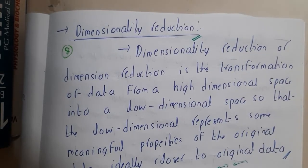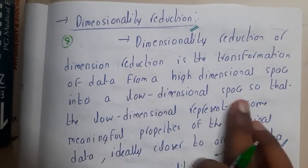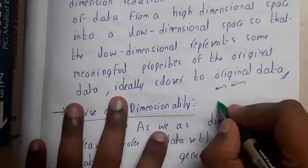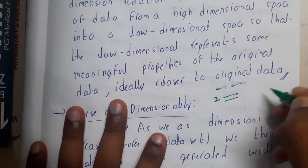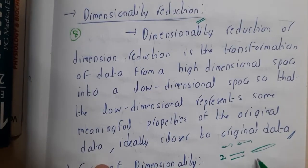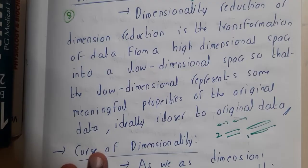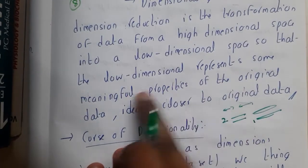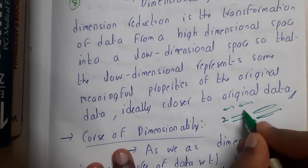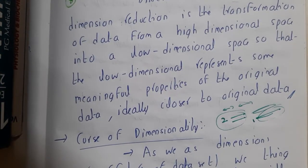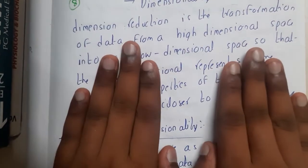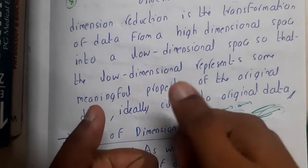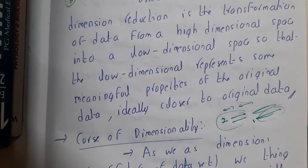Dimensionality reduction is the transformation of data from a higher dimensional space into a lower dimensional space. For example, if you have two properties like height and weight and you remove one of them, making it only one parameter, that is called dimensionality reduction. The lower dimensionality should still represent the same meaningful properties of the original data — even after this reduction, the properties of the data should remain the same.